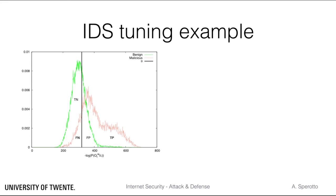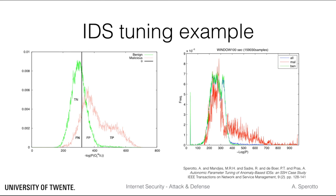Now let's look at the same picture for a real SSH trace. You can notice immediately that there is a lot more variability in the likelihood values. Also, the malicious and benign curves have a larger overlap, which means a larger portion of the traffic is indistinguishable. Does this mean the theory is not applicable? No, it is not that simple. It means that when designing an IDS, domain knowledge about the problem you are tackling — for example, which attack you want to detect — is fundamental for getting good results. And it also means you should not assume your IDS is a perfect classifier, but instead be prepared to handle detection errors.